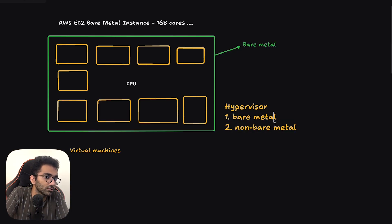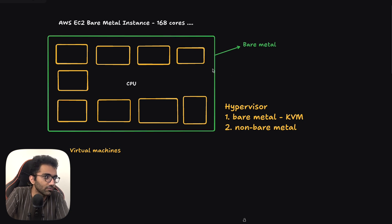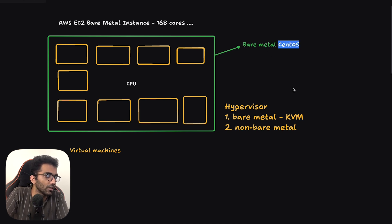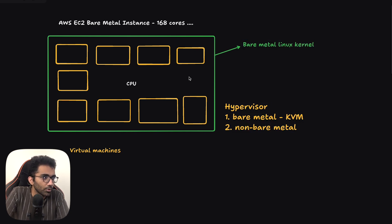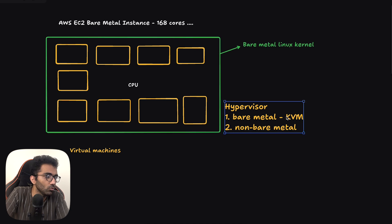On the bare metal side, there is something known as KVM — Kernel-based Virtualization technology. Just like VM is Virtual Machine, KVM is your Kernel Virtual Machine. What it does is that it's a bare metal technology — it literally turns your Linux kernel into a hypervisor. So if you have Ubuntu or CentOS installed and you enable KVM, you can turn that machine from an actual 64-core or 128-core computer into a hypervisor.